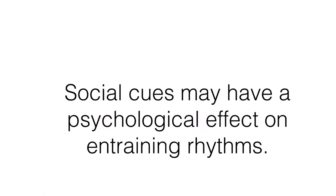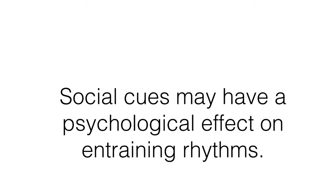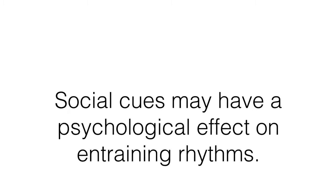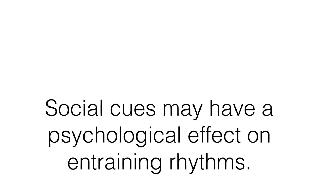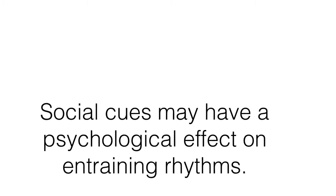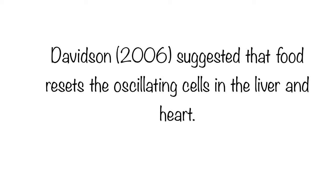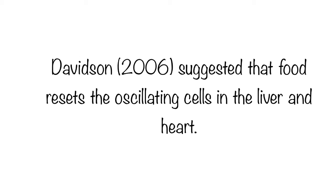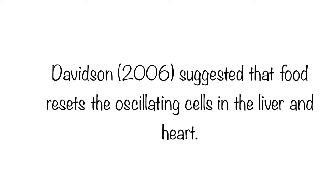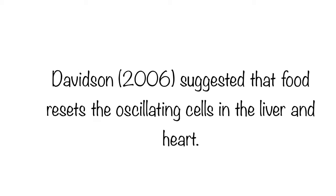Social cues, for example, might act as time givers and then train our rhythms psychologically. There might be an expectation we go to bed at a certain time, or a sense of time created through having three spaced meals in the day. However, it's also been suggested that meal times might entrain rhythms biologically by resetting the oscillating cells in the organs. Further research into the range and action of zeitgebers other than light is necessary to fully understand the interaction of the environment and the internal clock.